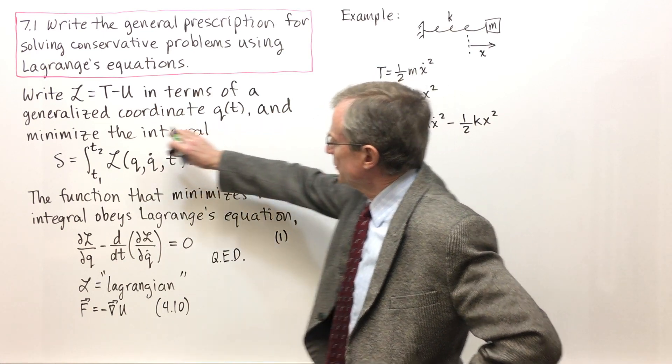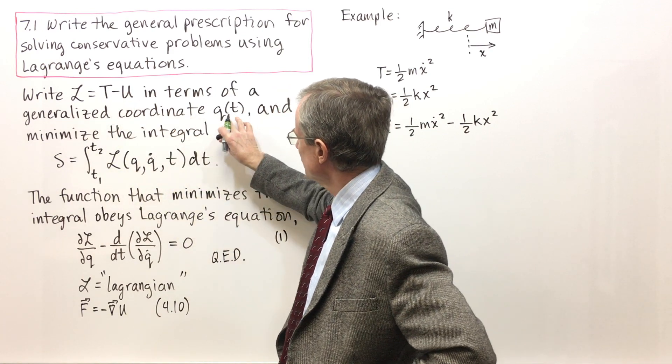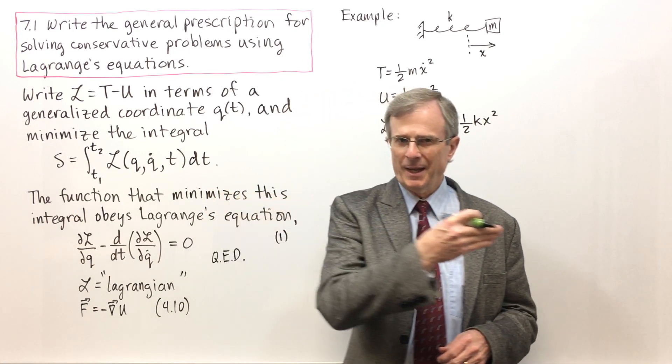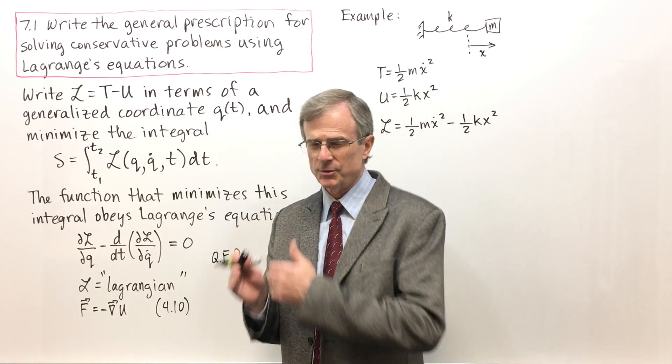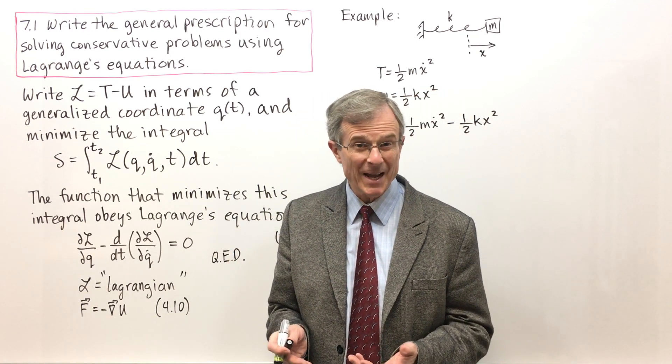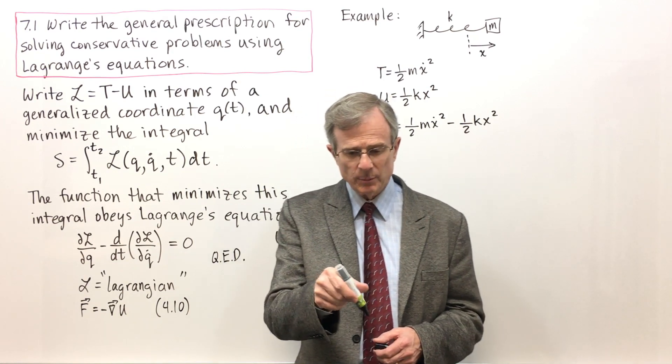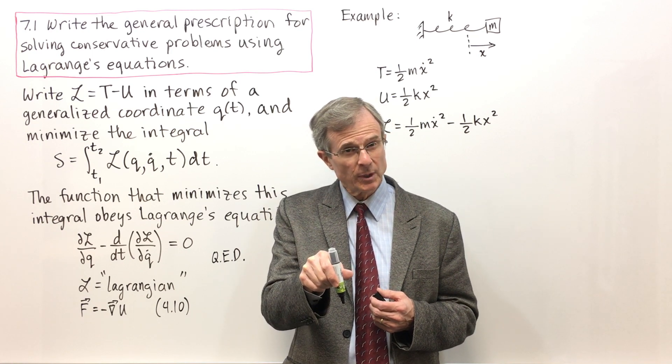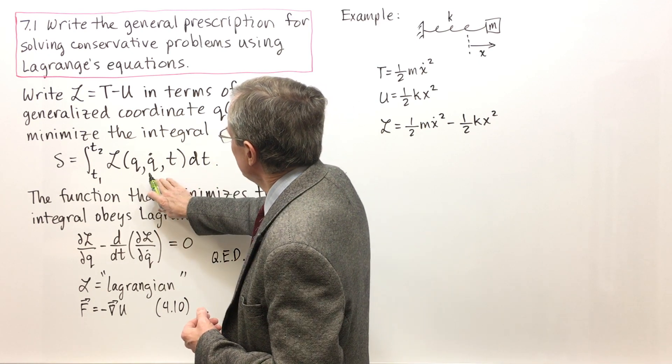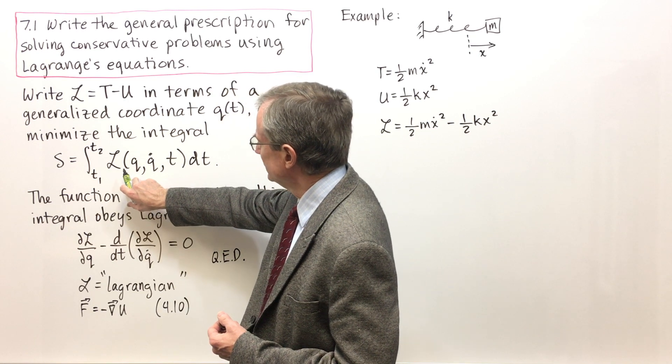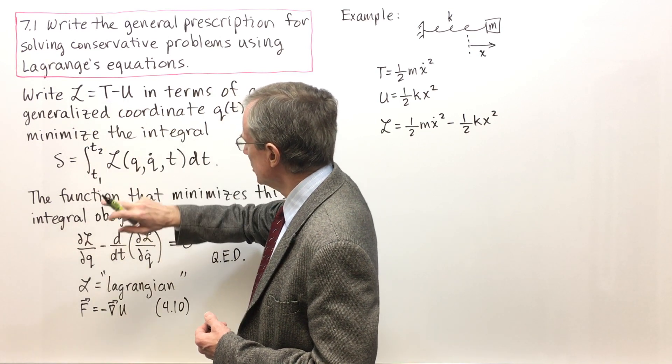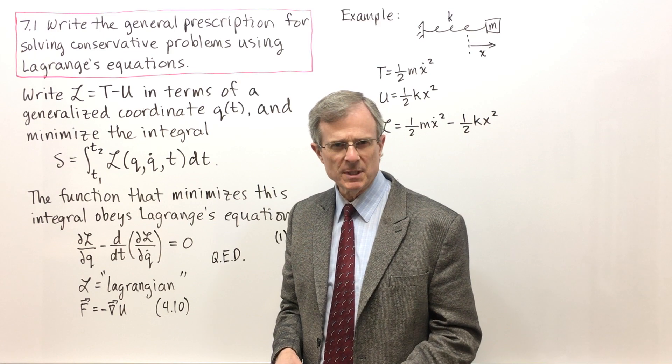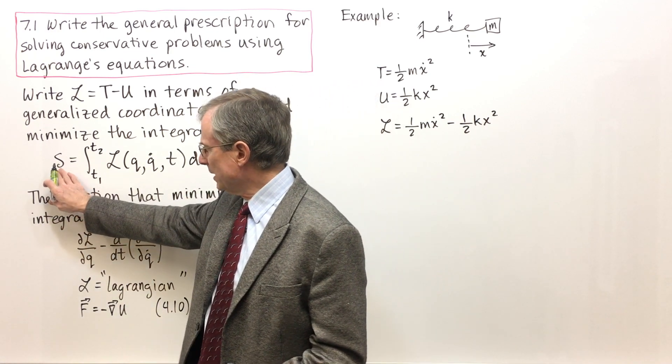The prescription is first to write L is T minus U in terms of some generalized coordinate, we'll say more about that later. An example we'll do is with the generalized coordinate being X, but you can choose that generalized coordinate as the one that's most natural for the problem. For the simple pendulum, for example, the natural generalized coordinate is the angle theta measured from the vertical. So you write L in terms of this generalized coordinate, and you integrate L from time T1 to time T2, integrate it over time, and this integral is a minimum.